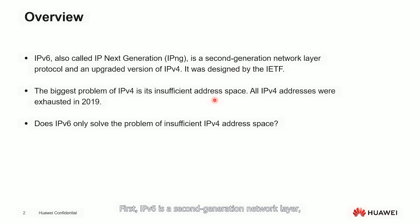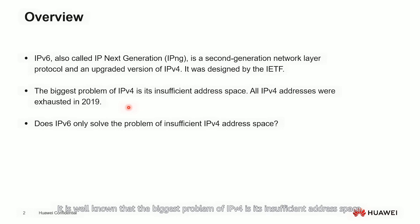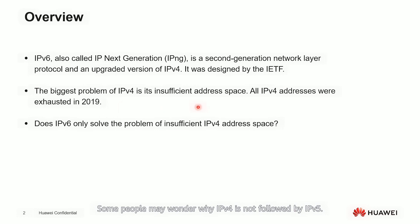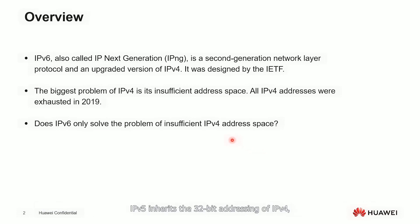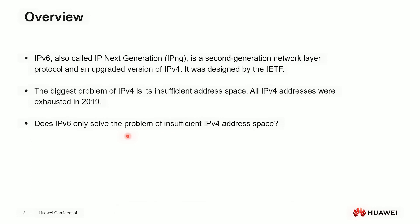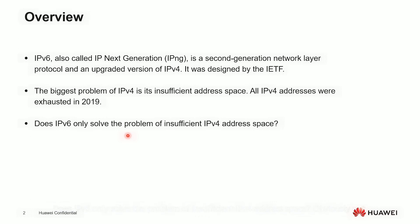IPv6 is a second-generation network layer protocol and an upgraded version of IPv4. The biggest problem of IPv4 is its insufficient address space — all IPv4 addresses were exhausted in 2019. Some people may wonder why IPv4 is not followed by IPv5. IPv5 is an experimental resource reservation protocol that aims to provide service quality. IPv5 inherits the 32-bit addressing of IPv4, so insufficient address space is also its fatal problem and it was abandoned before it became a standard.